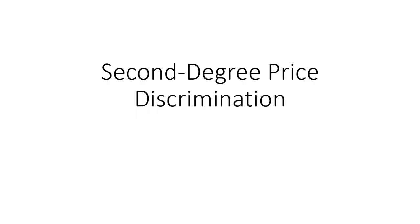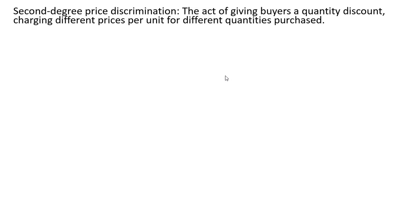In this video, we're going to do a second degree price discrimination problem. Second degree price discrimination is the act of giving buyers a quantity discount, charging different prices per unit for different quantities purchased.